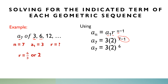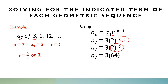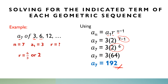Next, we are not going to multiply 3 by 2 first; rather, we are going to compute 2 to the power of 6. What is 2 to the power of 6? That is 64. So, 3 times 64 equals 192. Therefore, a sub 7 is equal to 192.